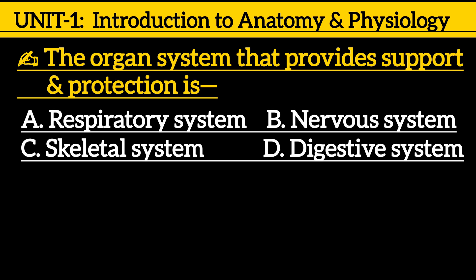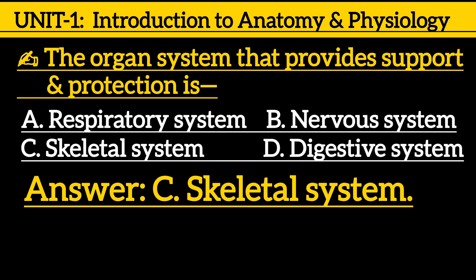Next one: The organ system that provides support and protection is — option A: respiratory system, option B: nervous system, option C: skeletal system, option D: digestive system. The correct answer is option C: skeletal system.